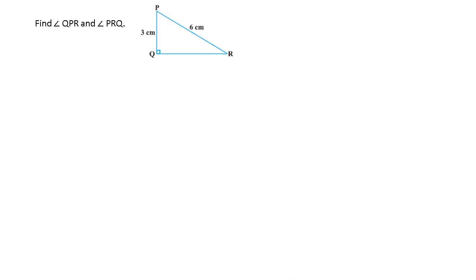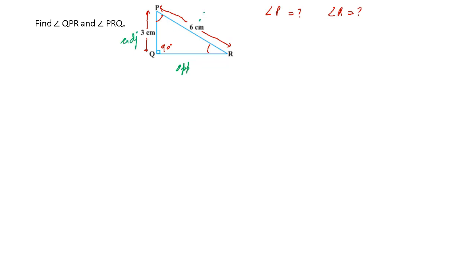In this triangle, angle Q is 90 degrees. PQ is given as 3 centimeters and PR is given as 6 centimeters. We need to find angle QPR and angle PRQ — basically the measures of angle P and angle R. Let's first look at everything with respect to angle P. With angle P as the base, the opposite side is QR, the adjacent side is PQ, and the hypotenuse is PR.